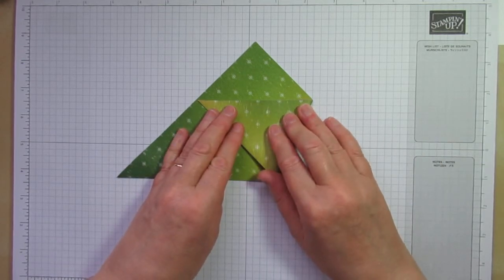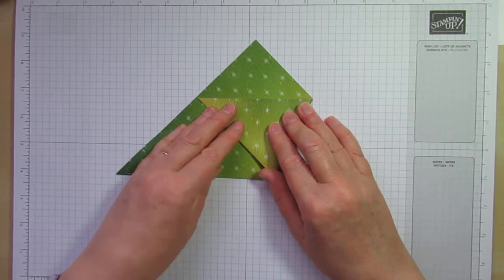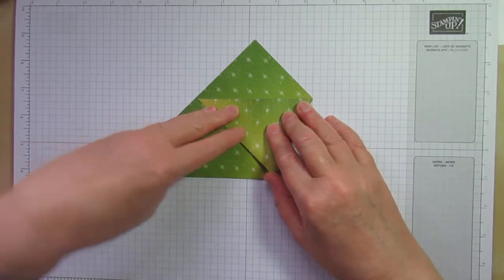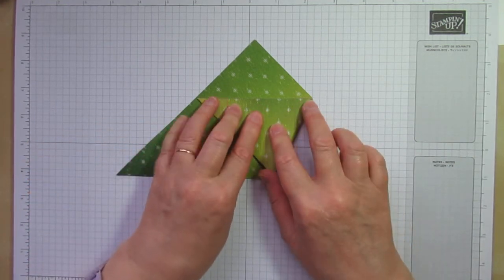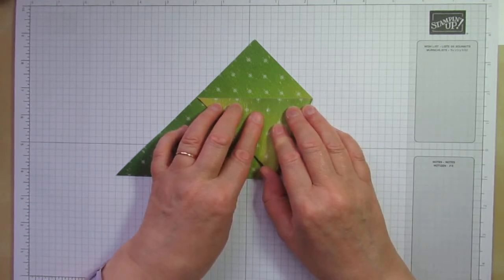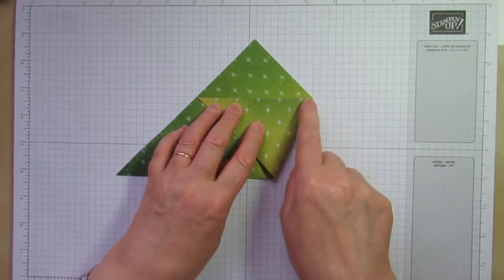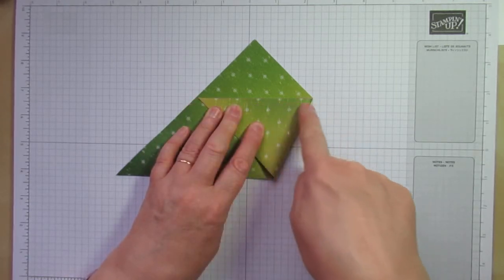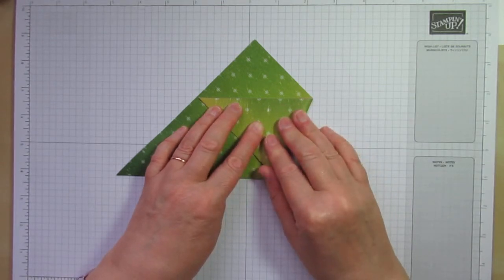And I'm just going to move this up a little bit keeping it straight with that bottom line but I want to make sure that I fold this straight so I'm just using that line on my grid paper to keep me right.